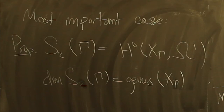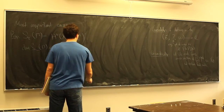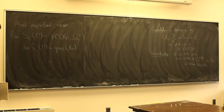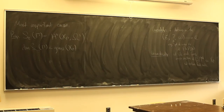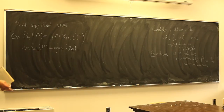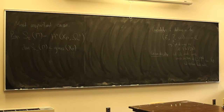You can prove this yourself — it works just like the level one case, just a bit more complicated. The things that are not true in higher level are the specific dimension formula k/6 and that modular forms are generated by two Eisenstein series. Those very explicit statements go wrong for smaller groups.